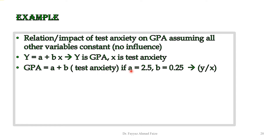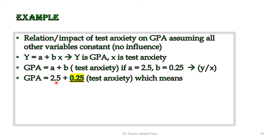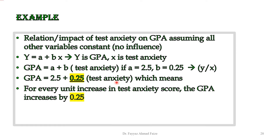If we have values of a equal to 2.5 and b equal to 0.25, this means the y-intercept is 2.5, so the graph crosses the y-axis at 2.5. Our equation becomes: GPA equals 2.5 plus 0.25 times test anxiety. The value 0.25 stands for the regression coefficient represented by symbol b, meaning if your predictor variable changes by 1 unit, how much will your GPA or dependent variable change?